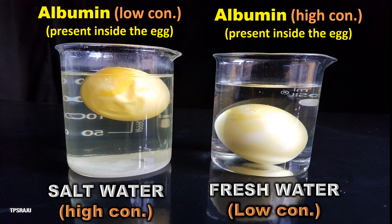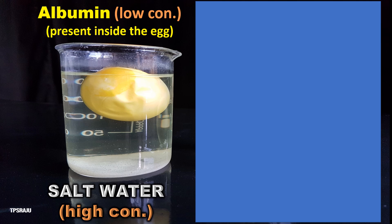In the first beaker, salt water is more concentrated than the albumin present in the egg. These two solutions are separated by the egg membrane. We already know that the egg membrane acts as a semi-permeable membrane. Hence, water molecules move from the low concentration point — i.e., albumin — to the high concentration point — i.e., salt water — so that the egg present in salt water shrinks.